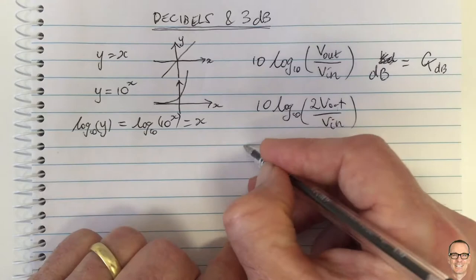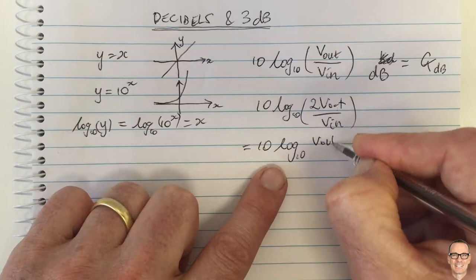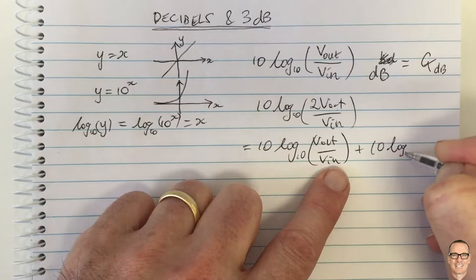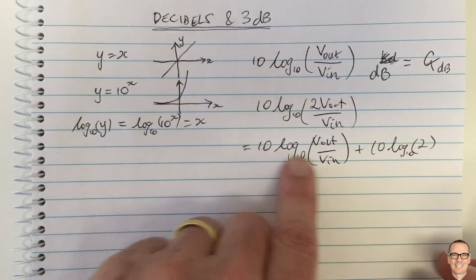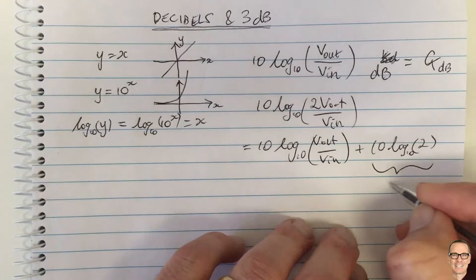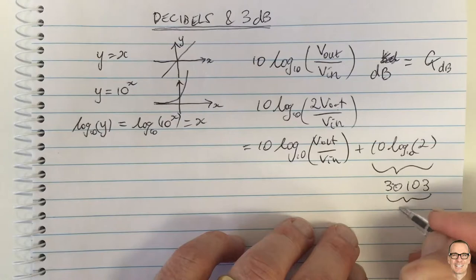...so this equals 10 log to the base 10 of 2 okay so this is log of a times b equals log of a plus log of b...